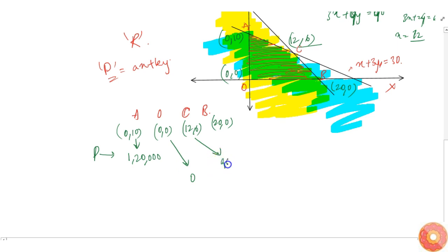At point C, it's 96,000 plus 72,000, which is 1,68,000. At point B, it's 1,60,000. At point O, it's zero.